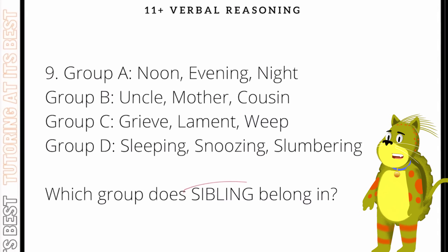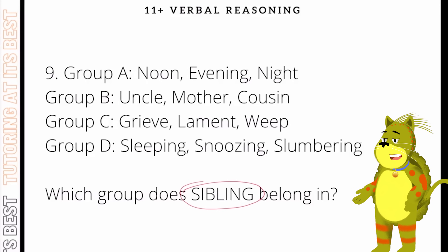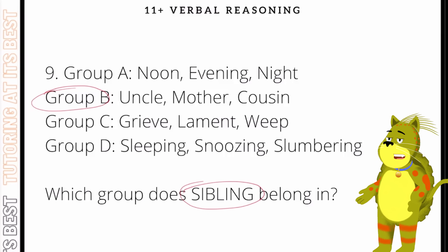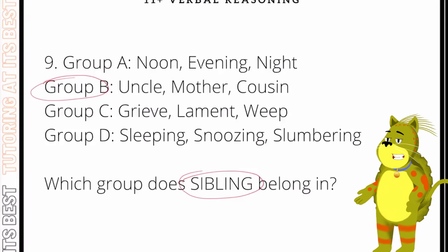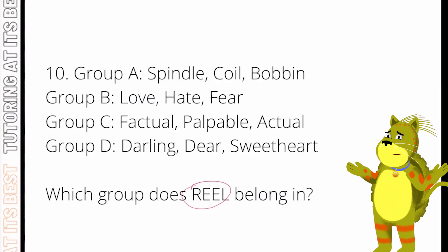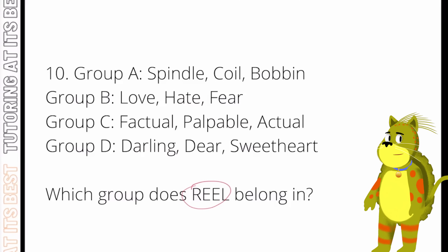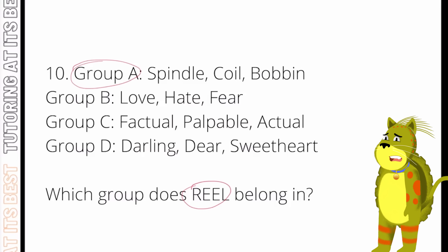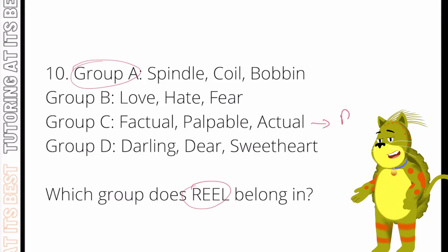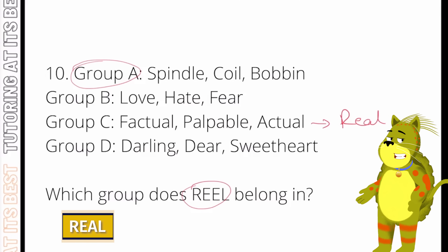Question number nine: we're looking for the word 'sibling'. The answer is group B — all of the words in group B are members of your family or relatives, and a sibling is a brother or a sister. Finally, question ten: we're working with the word 'reel'. Looking at the words in group A, they describe cylinders of thread, as does 'reel', so it belongs in group A. Don't get confused with group C, because that would refer to 'real' with the spelling r-e-a-l.